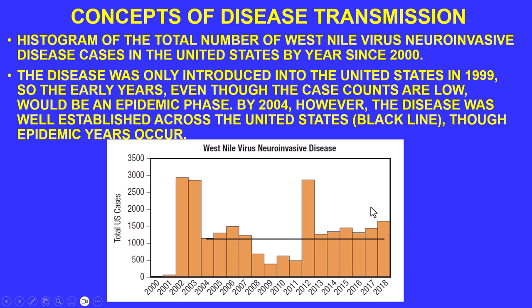Changes in case counts may reflect years when the vector — the mosquito — is proliferating in favorable conditions like wet, swampy land. Migratory birds entering the area become infected and, before dying, can spread the virus to additional mosquitoes, extending the geographic reach beyond the original area.